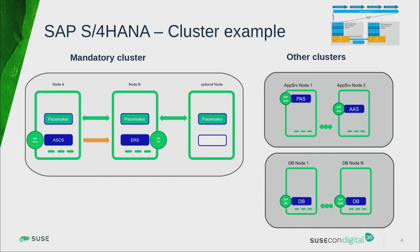Let us begin with S4HANA application servers, a cluster example. The mandatory cluster is focusing on the ASCS, the central services, and the ERS, the replication instances, here being shown on node A and node B. You can also build up a cluster of two, three, or more nodes depending on your needs. Other clusters are running primary application servers (PAS) or AAS additional application servers. And you can add SAP HANA system replication or other databases in the database-oriented cluster.